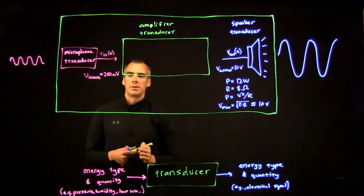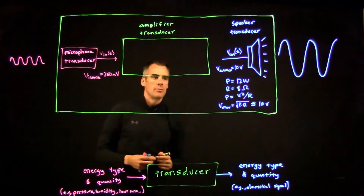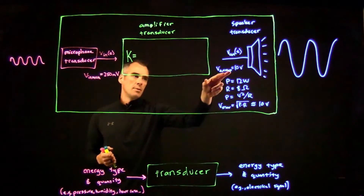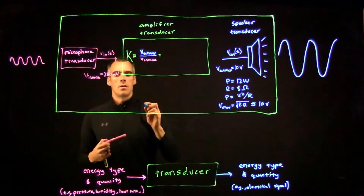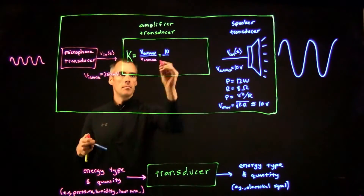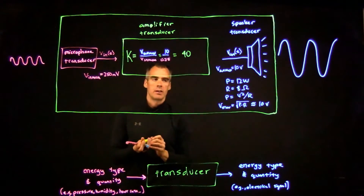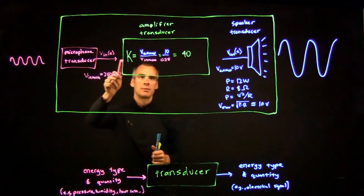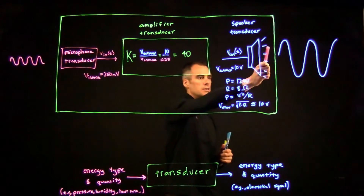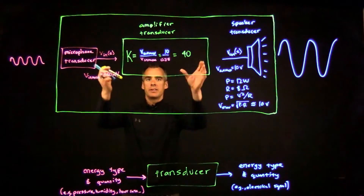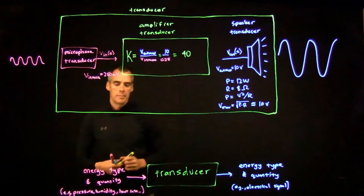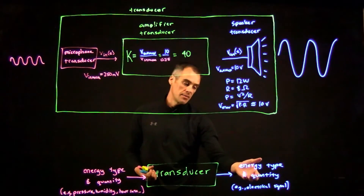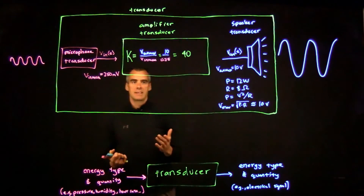So what we need to do is amplify this signal by a factor called K. K is going to be equal to our maximum output divided by our max input, which is 10 volts divided by 250 millivolts, giving us K equals 40. So here we have a basic example of a transducer system: a microphone transducer gets the audio signal into voltage, an amplifier transducer scales it up, and a speaker transducer converts that voltage into the audio you hear. All of these together can also be called a transducer, because it takes an audio input and changes its type or quantity into what comes out of your speakers.